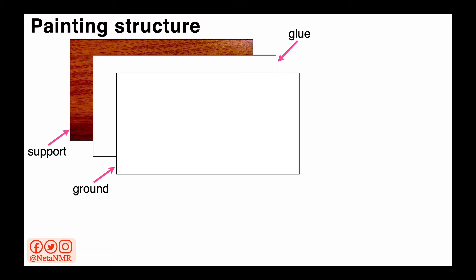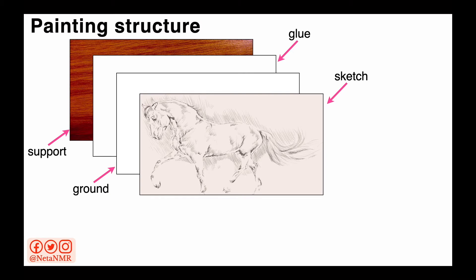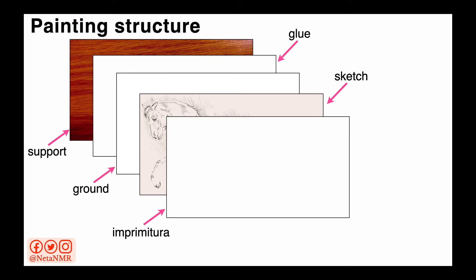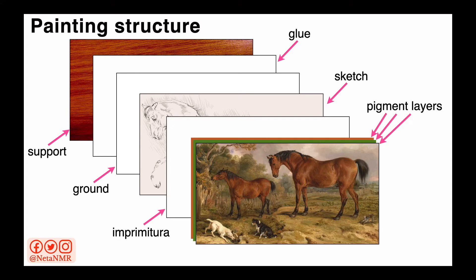On top of the ground, the artist creates the sketch. Different carbon-rich materials can be used for creating the sketch. These include charcoal, graphite, or bone black. The sketch is then covered by imprimitura — a thin preliminary glaze added to the painting to prime it before adding the paint layers.